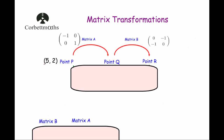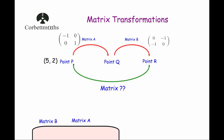We have point P at (5, 2). We apply transformation matrix A — the matrix minus 1, 0, 0, 1 — to get point Q. Then we apply transformation matrix B — the matrix 0, minus 1, minus 1, 0 — to get point R. We want to find the single combined matrix that brings us straight from P to R.